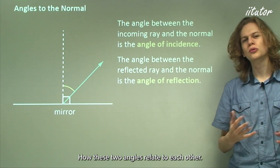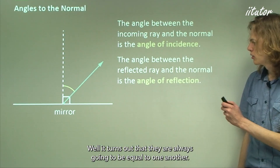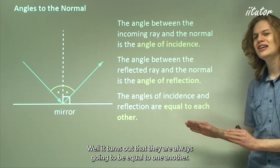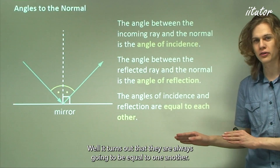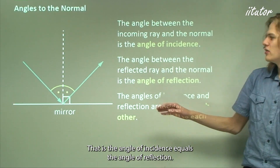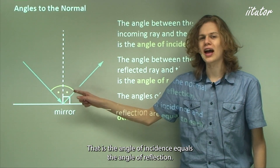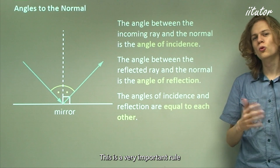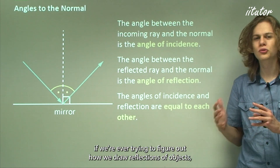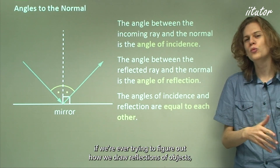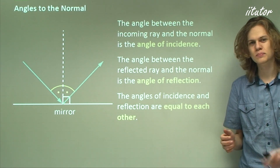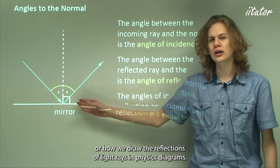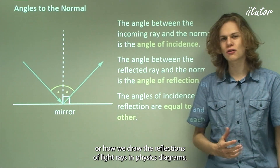How do these two angles relate to each other? It turns out that they are always equal to one another — the angle of incidence equals the angle of reflection. This is a very important rule when figuring out how to draw reflections of objects or light rays in physics diagrams.